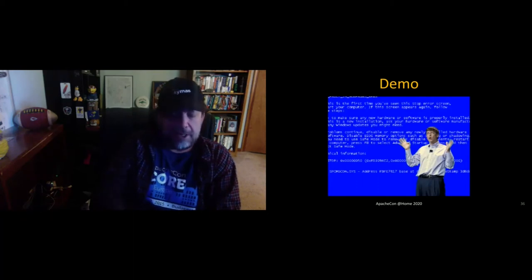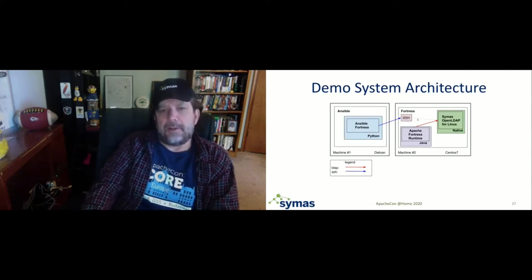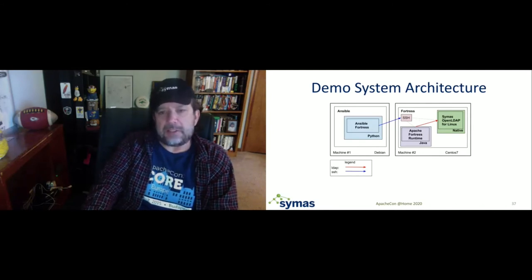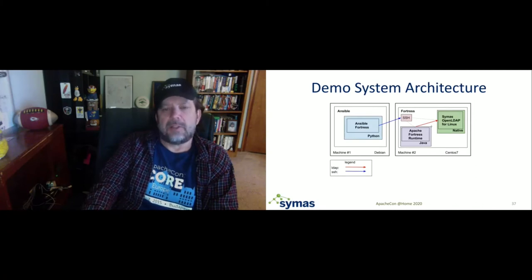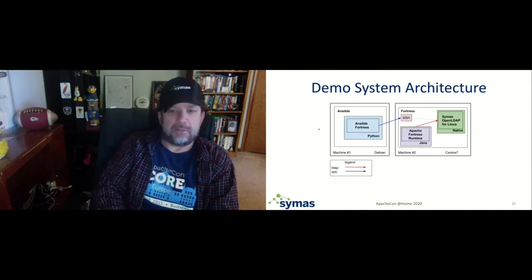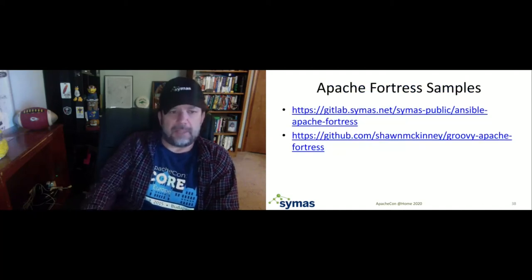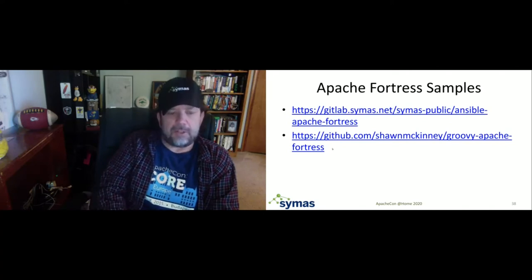Let's look at the demo of this code running. I have a demo environment running in the cloud. There's one machine running the Fortress runtime, and it has a database which is an LDAP server — in this case running Simus OpenLDAP for Linux. Fortress is a Java app, so there's a couple of projects set up: Apache Fortress core and the Groovy Apache Fortress project. All of that is automated behind an Ansible Fortress playbook that I wrote and have released. If you're familiar with Ansible and have an extra machine, you can try that and be set up in just a couple of minutes. The Ansible playbook and the Groovy Apache Fortress project are in public accounts on GitHub.